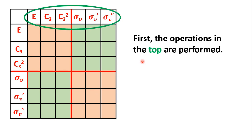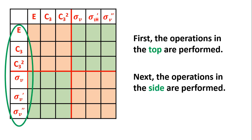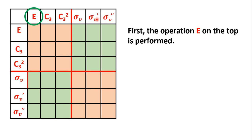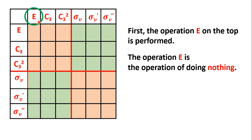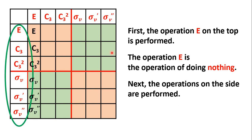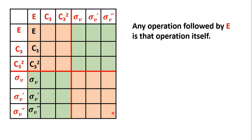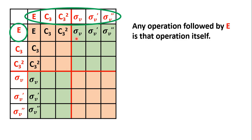Now let us fill up this group multiplication table. The operations on the top are performed first, followed by the operations on the side. E is the operation of doing nothing, so E on the top followed by E on the side will be E. E on the top followed by C3 on the side will be C3, and E on the top followed by C3 square will be C3 square. Similarly, C3 on the top followed by E will be C3, and sigma V on the top followed by E will be sigma V.